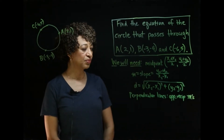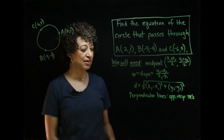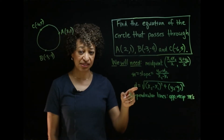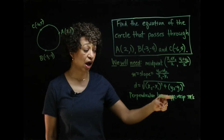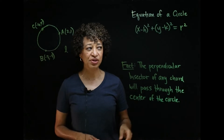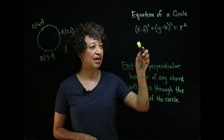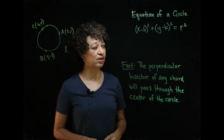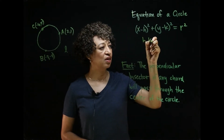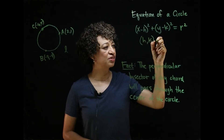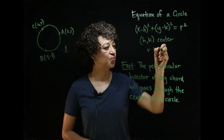We'll need the midpoint formula. We need the slope formula — y2 minus y1 over x2 minus x1 — and we'll need the distance formula. We will also need to remember that perpendicular lines have slopes that are opposite reciprocals. The standard form of the equation of a circle is x minus h squared plus y minus k squared equals r squared, where h and k are the coordinates of the center and r is the radius.